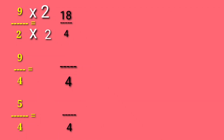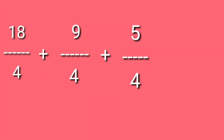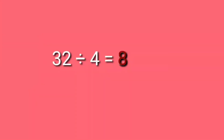Now let's move on to 9 over 4 — multiply by 1, so we just copy 9 over 4. And for 5 over 4, multiply by 1 as well, so we copy 5 over 4. So 18 over 4 plus 9 over 4 plus 5 over 4 equals 32 over 4. Since it's an improper fraction, divide 32 by 4 — the answer is 8 cups of flour.